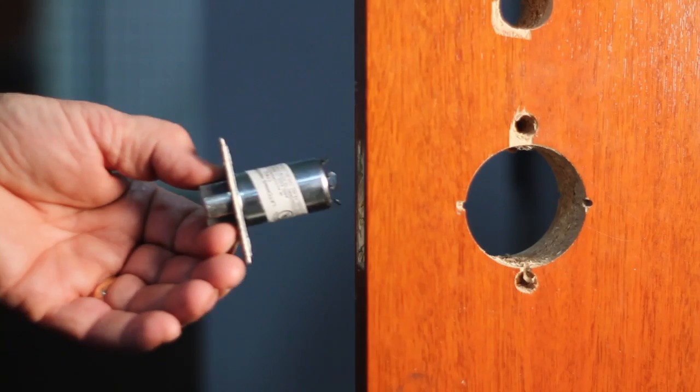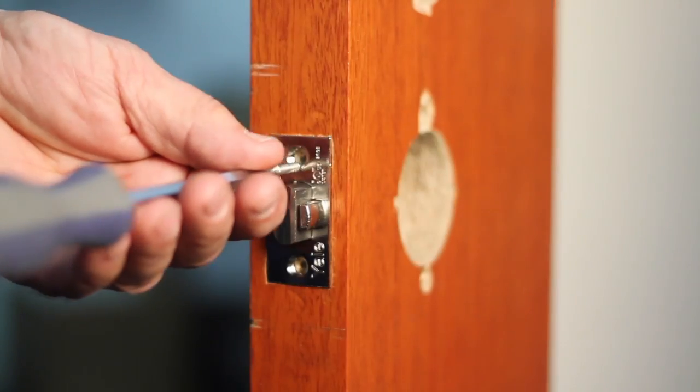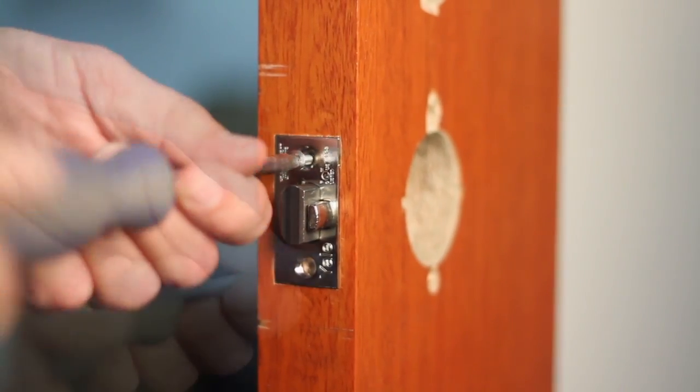Find the latch bolt and install in the door, ensuring that the bevel edge of the bolt faces the strike lip. Attach the two screws provided.